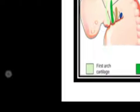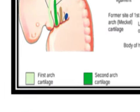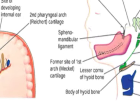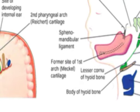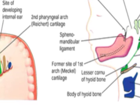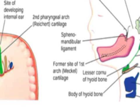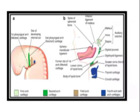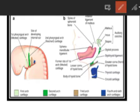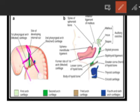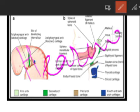The first visceral arch is responsible for the middle part of the ear — the auditory system. So the first visceral arch helps prepare the hearing or auditory system.